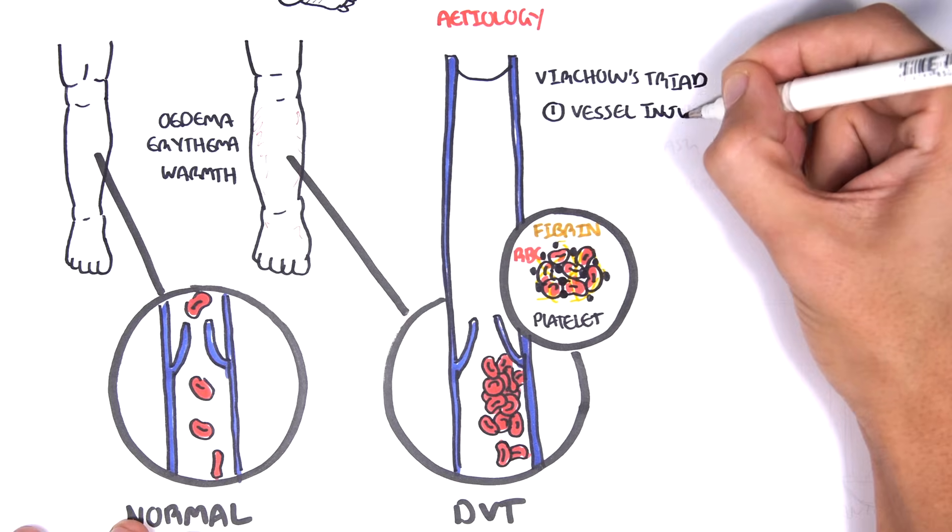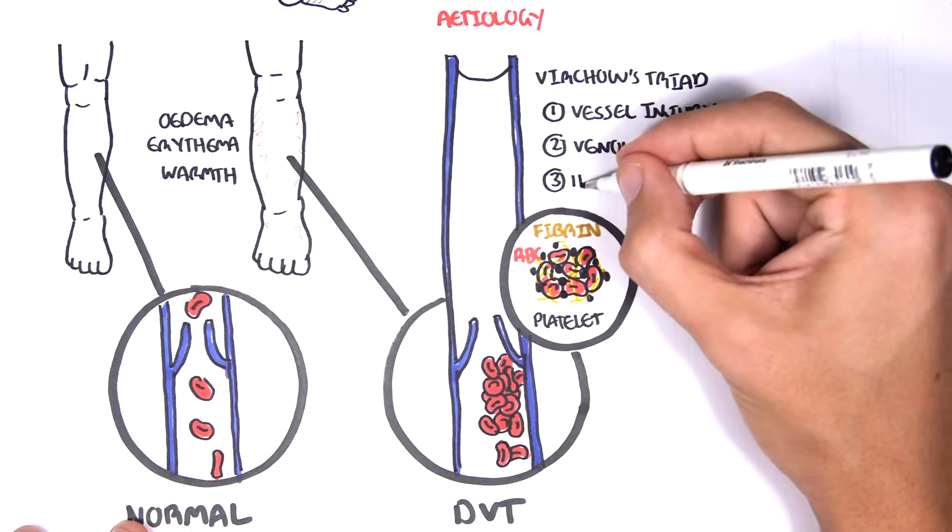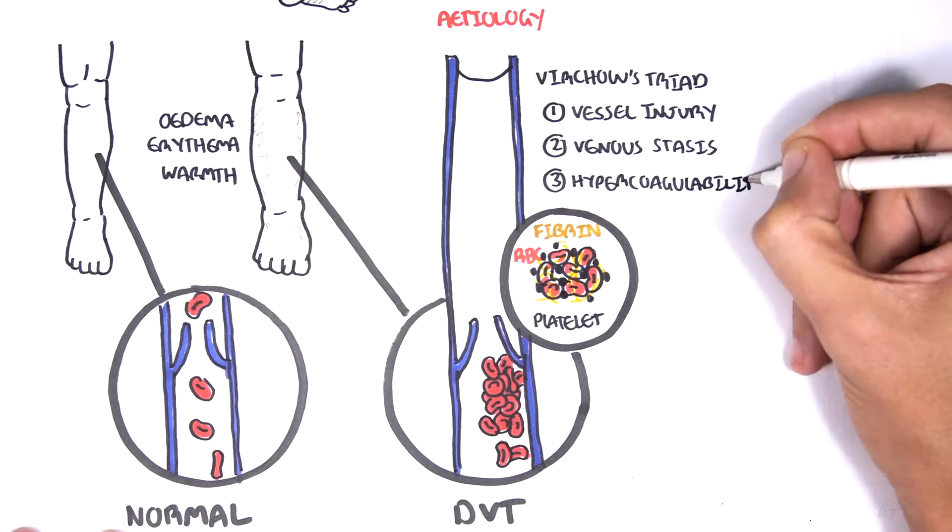And these three things or factors make up what we call Virchow's triad. And Virchow's triad includes vessel injury number one, venous stasis number two, and hypercoagulability number three.